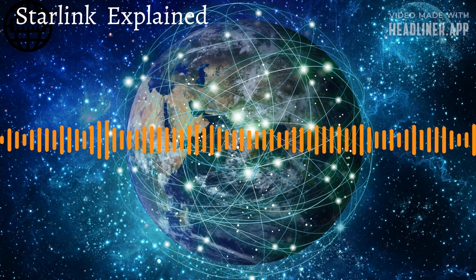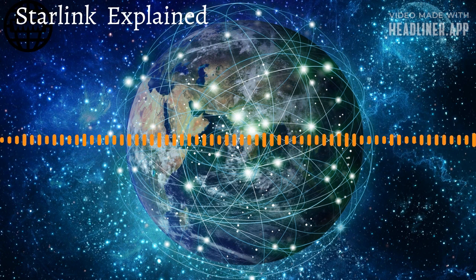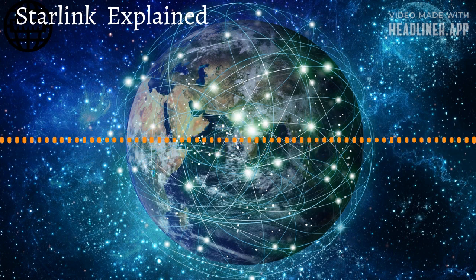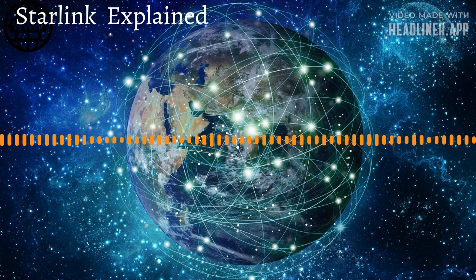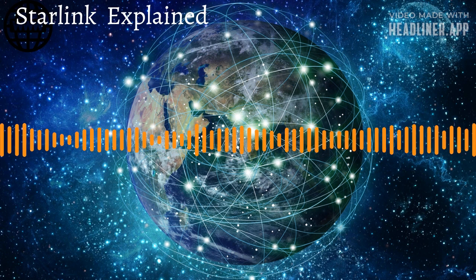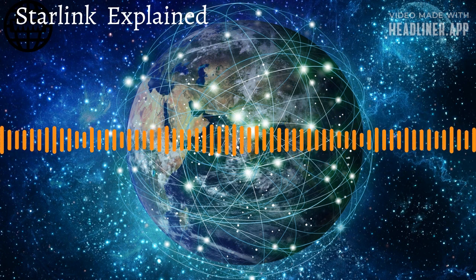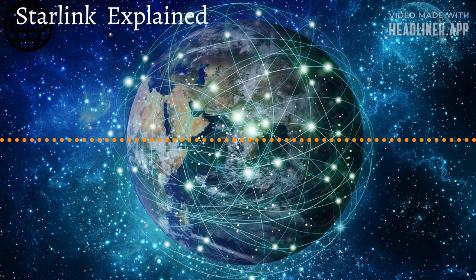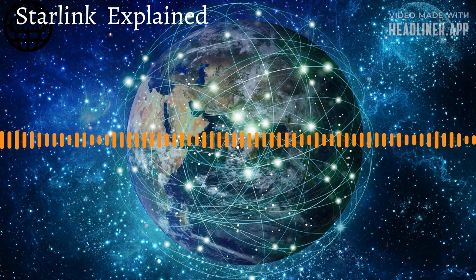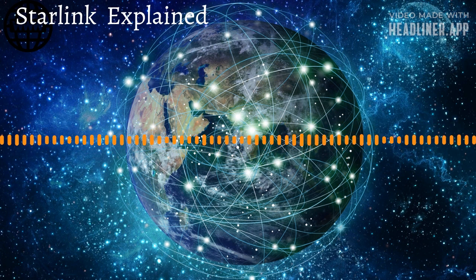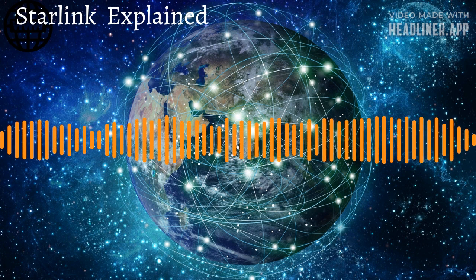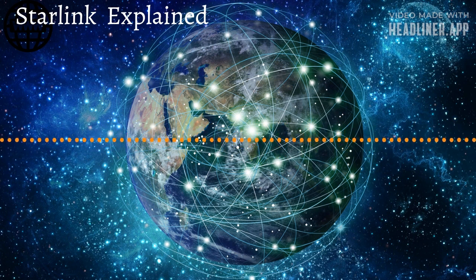There's a Starlink app for Android and iOS that I'll link in the description below. It features augmented reality to help consumers pick the best location to place their receivers at home. Once you've bought the Starlink router and antenna, the augmented reality feature will show you in 3D the best way to place your Starlink device.